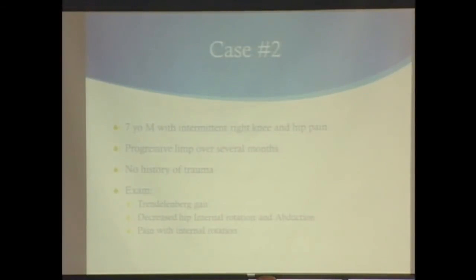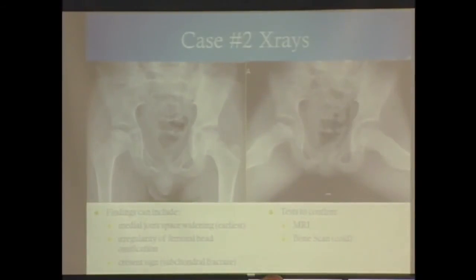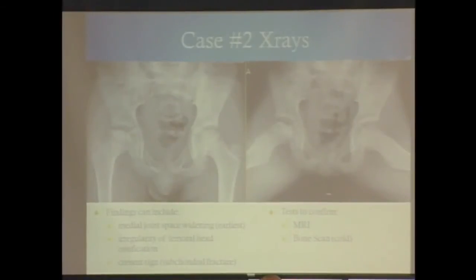Second case: seven-year-old boy with intermittent right knee and hip pain, progressive limp over several months, no history of trauma. He has a Trendelenburg gait but it's also painful — leaning to his right side with each step. He has pain and decreased internal rotation and abduction, so we're thinking Perthes. On x-ray, early findings include medial joint space widening, then irregularity and collapsing of the femoral head. Early cases may show cold appearance on bone scan; MRI can also confirm.